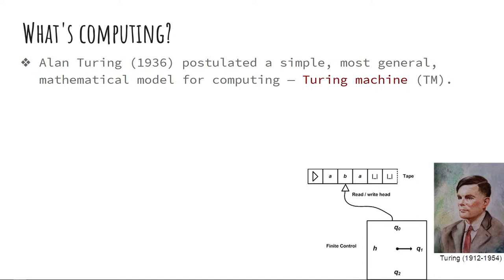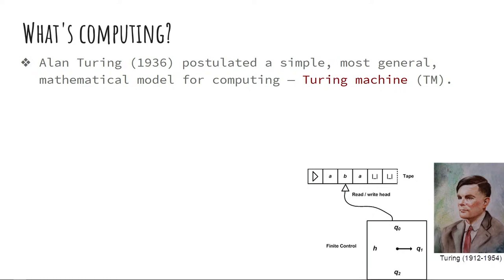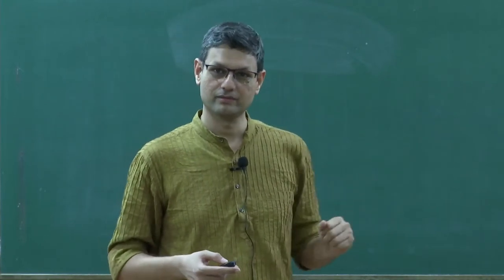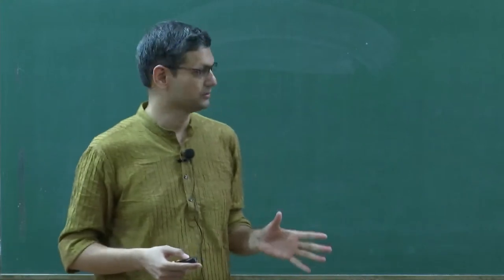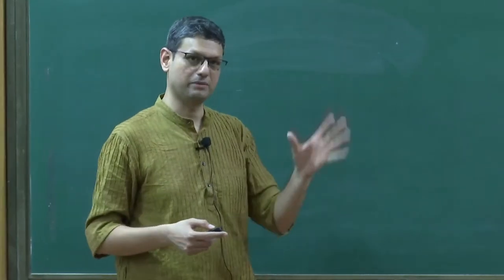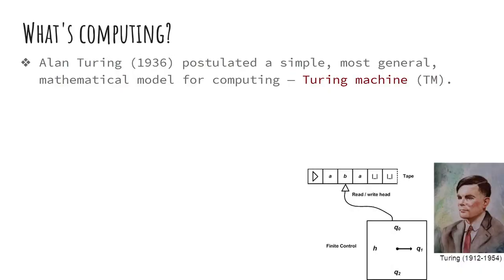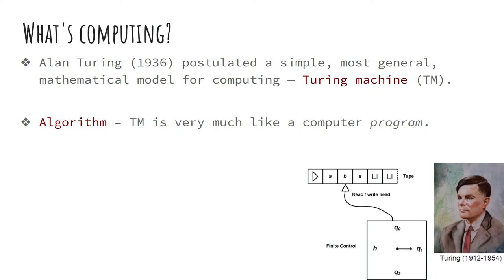This is a very simple machine, and believe it or not, there is no machine known to humankind which is more powerful than this. Everything that we do or have done can be simulated on this machine. Whatever it does, we call that computation following Turing — an algorithm, Turing machine, or a computer program are all the same thing for this talk. A C program or Python program can be written as simply as a Turing machine recipe.